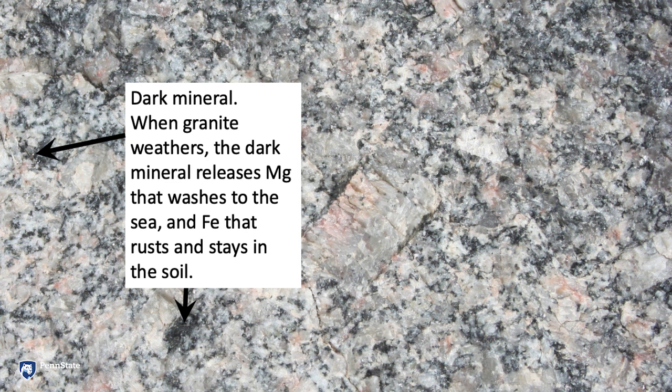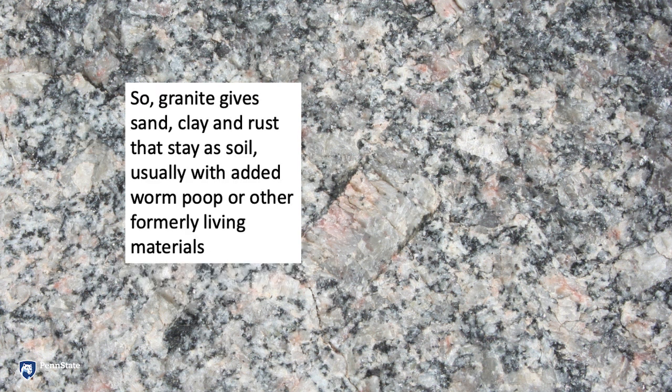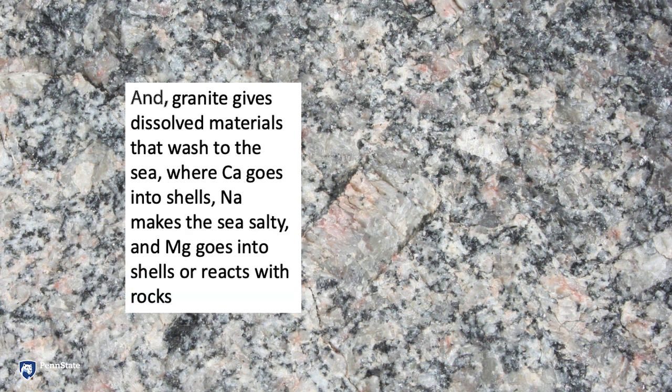When the granite weathers and the dark mineral breaks down, it releases magnesium that washes to the sea and iron that rusts and stays in the soil. So granite breaks down to give sand, clay, and rust that stay in the soil — usually with added worm poop or other formerly living things — and dissolved materials that wash to the sea.